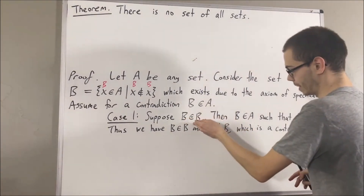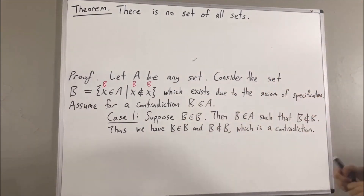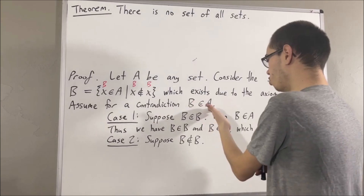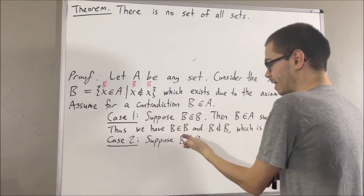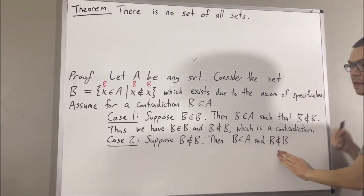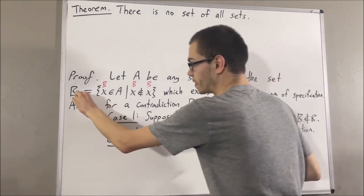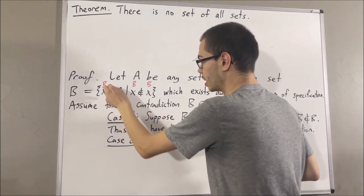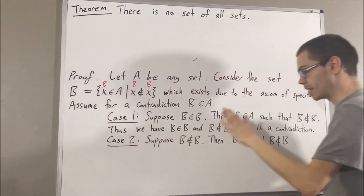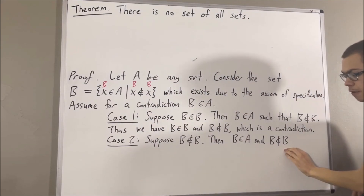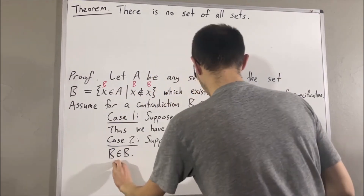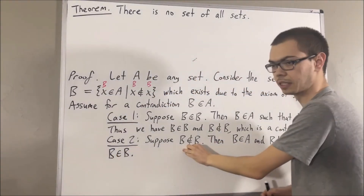So this completes the case of B is an element of B. Now let's consider the case B is not an element of B. Since we're assuming B is an element of A, we have B as an element of A and B is not an element of B. But this tells us that B satisfies all the requirements to be an element of B, because to say that B is an element of B means B is an element of A with the property that B is not an element of B. B satisfies precisely those properties, and therefore B must be an element of B. So again, we see B is an element of B and B is not an element of B, which is a contradiction.